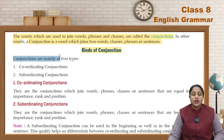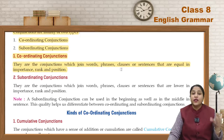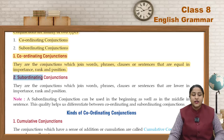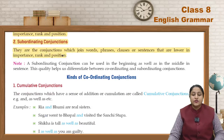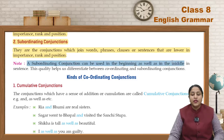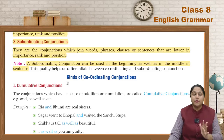Signs of Conjunction: Conjunctions are mainly of two types — Coordinating Conjunction and Subordinating Conjunction. Coordinating Conjunctions join words, phrases, clauses or sentences that are equal. Subordinating Conjunctions can be used in the beginning as well as in the middle of the sentence, but Coordinating Conjunction is always in the middle of the sentence.